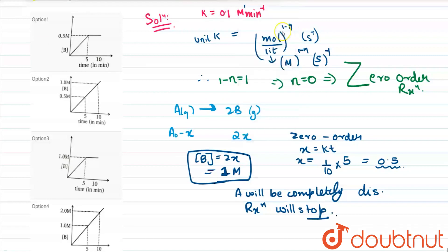Okay so coming to graph number 1, at time 5 minutes that is t equal to 5 minutes, the concentration of B is given to us 0.5 molar but we found that the concentration is 1 molar. So this is a wrong option.